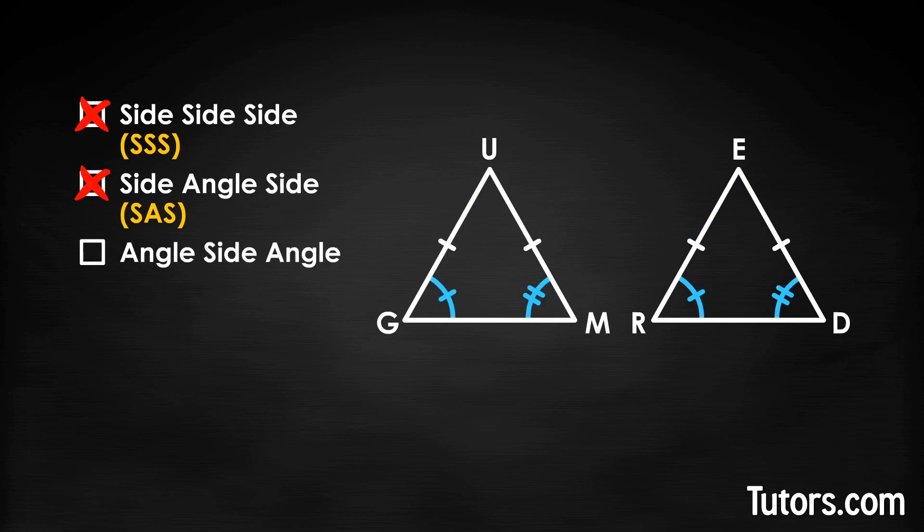Angle-side-angle, ASA. This looks promising at first, but the side we know about is not an included side, so not this one. Hypotenuse leg, HL. This is reserved for right triangles, which we don't have, so not this one.